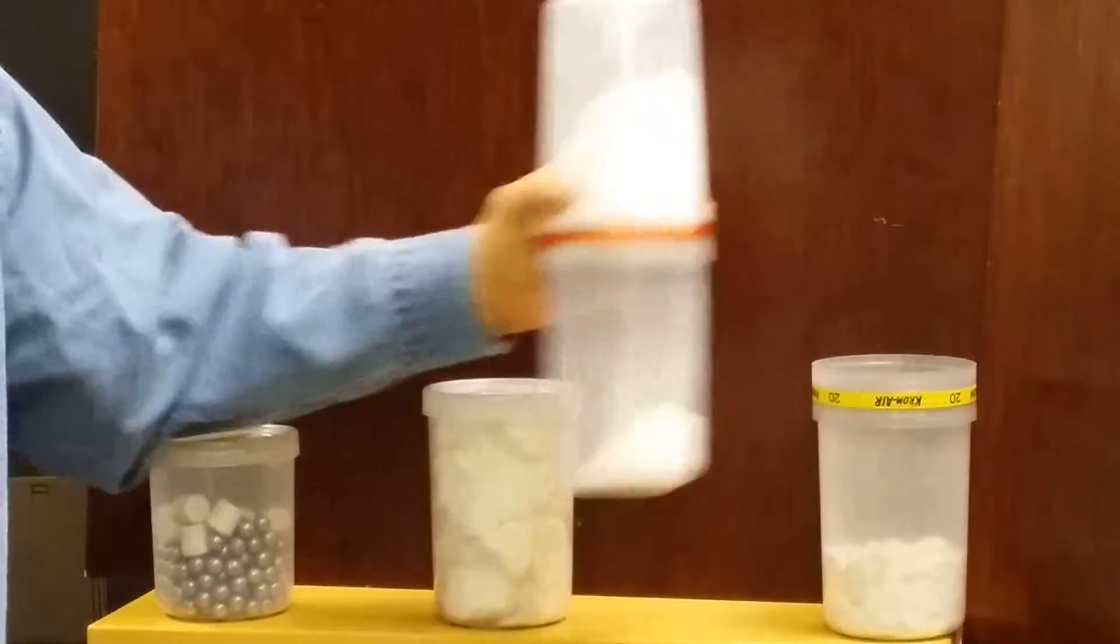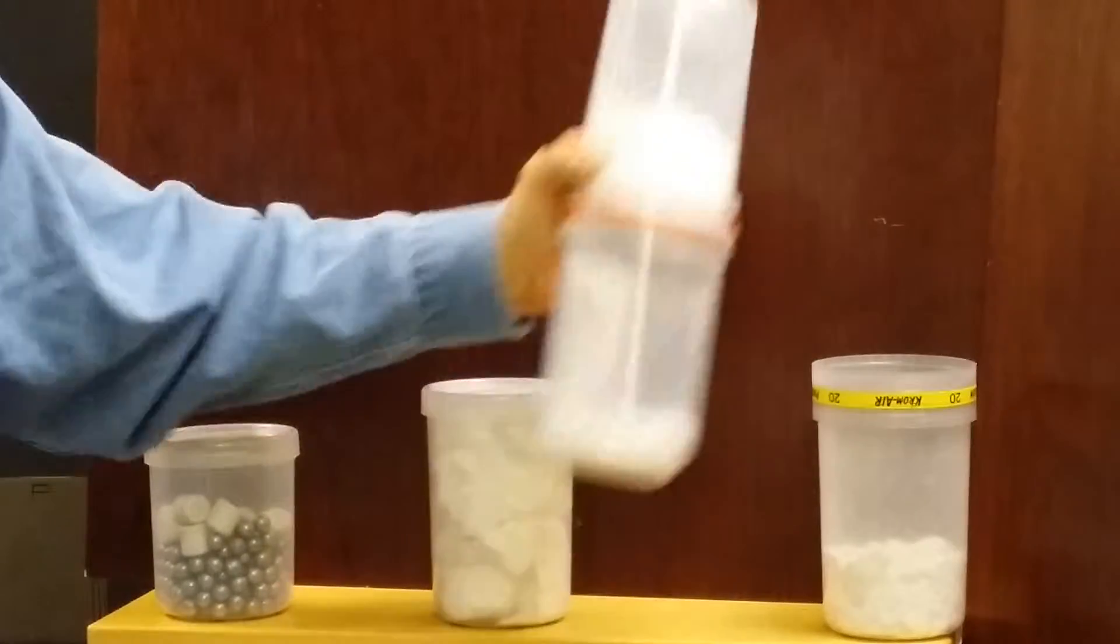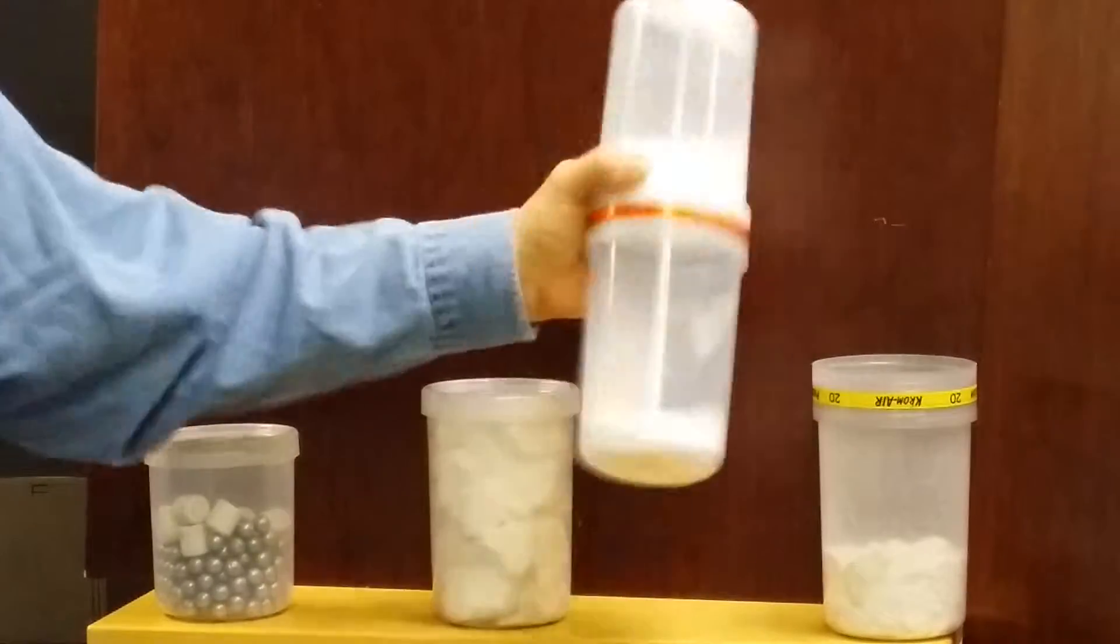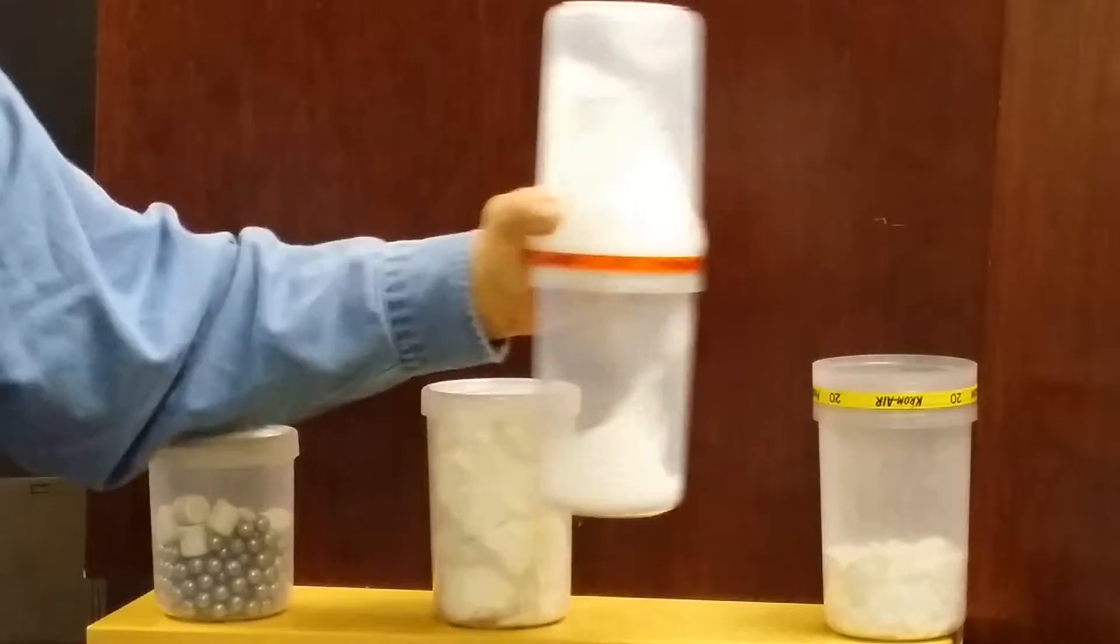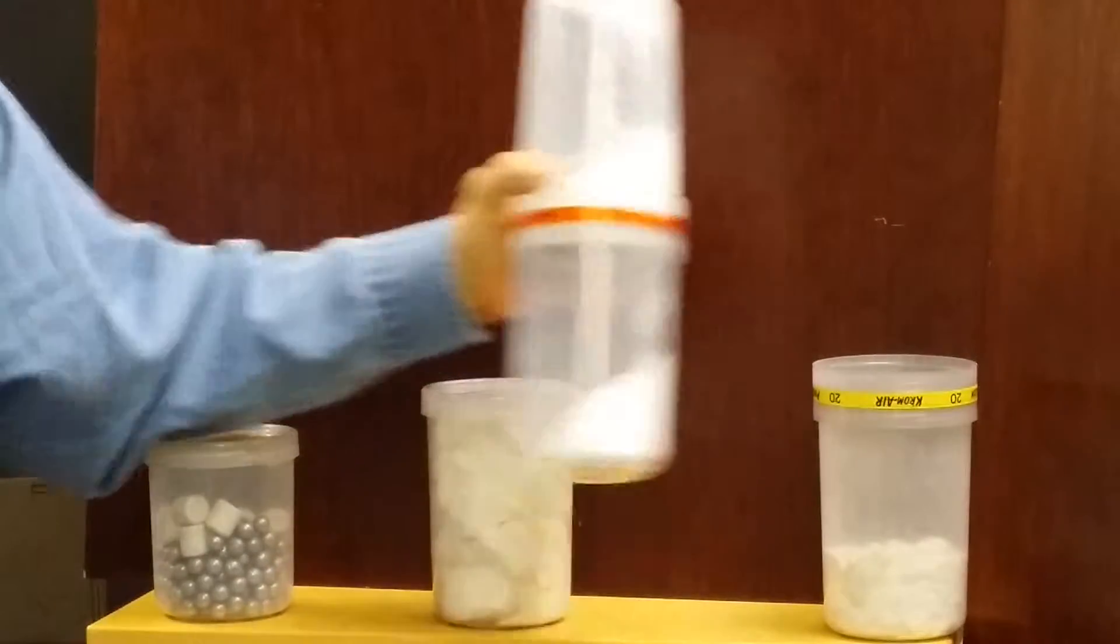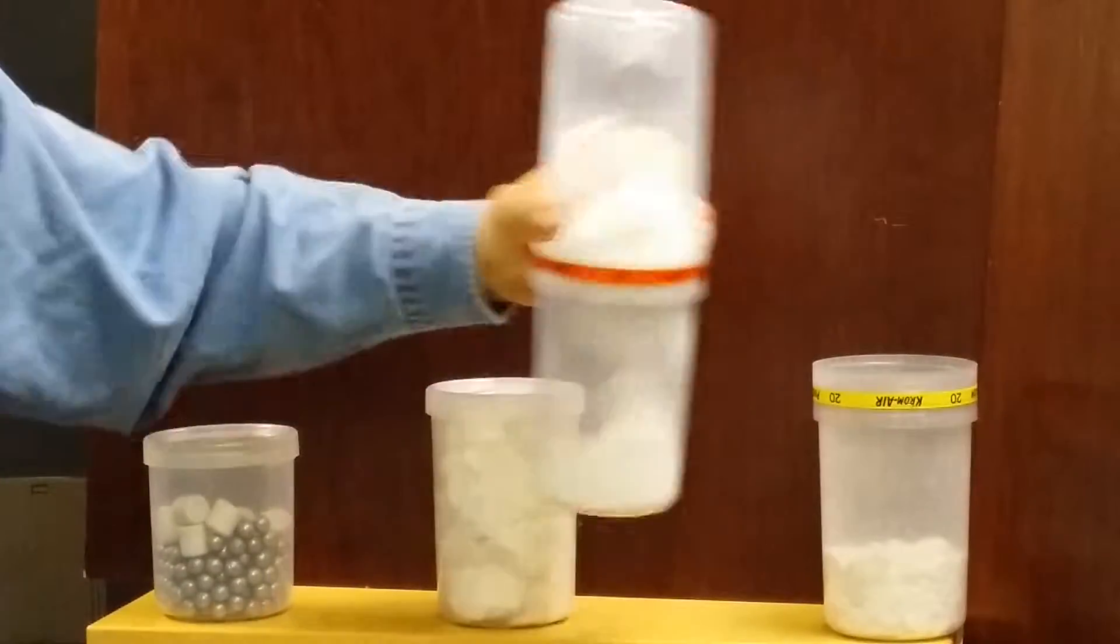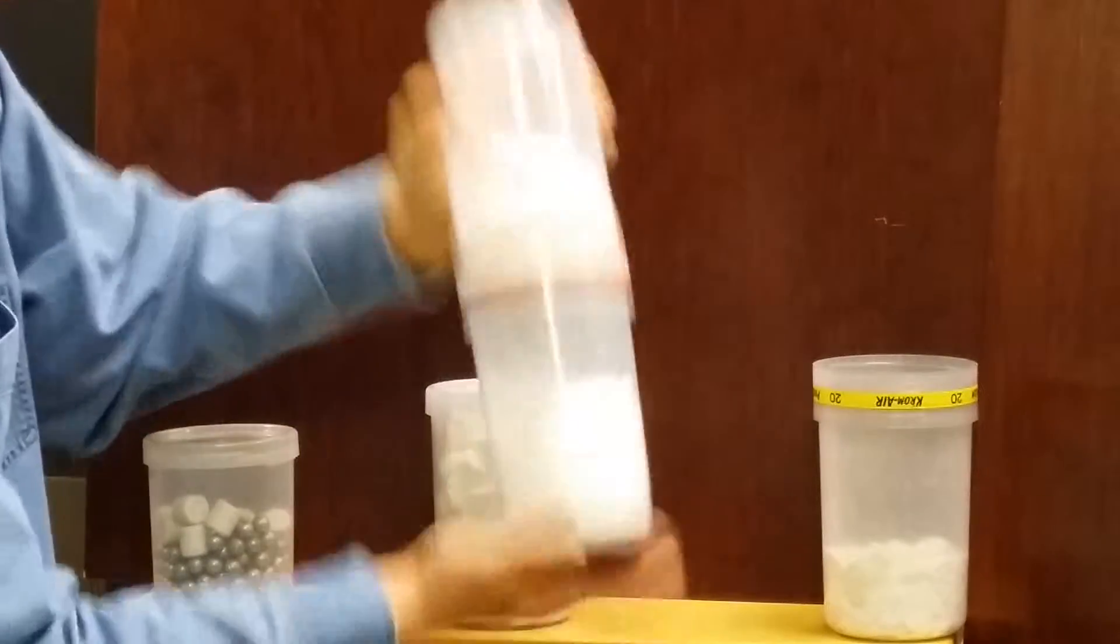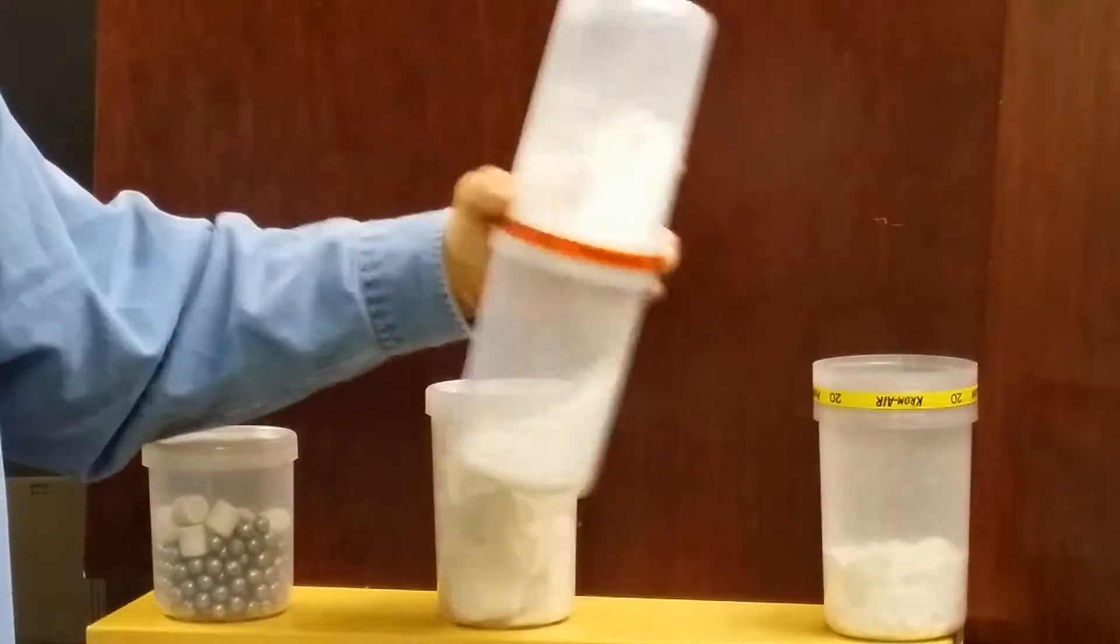This is the particle size that I really want when I'm mixing the color composition. I use the 20 mesh first—it's always easier to start with a coarser mesh screen and run the material through that, then step to the next size down. You can see in this case I'm able to move that material through.